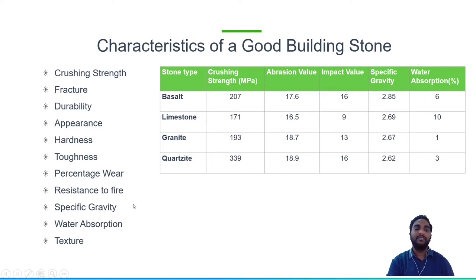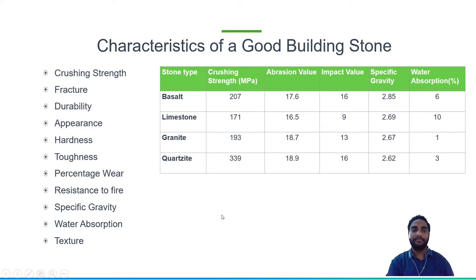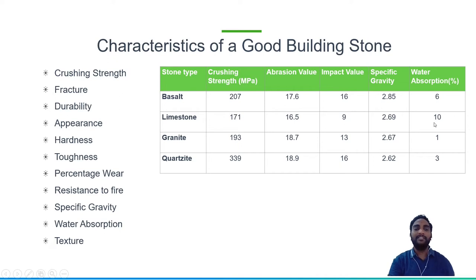Specific gravity is the ratio between the density of a substance to the density of an equal amount of water. For building stones it should be between 2.3 to 2.5 to be considered very good, and all the stones in the table have a good specific gravity. For water absorption, it should be less than 6%. Basalt has 6%, granite has 1%, and quartzite has 3%. That is why granite is used as a flooring material — it won't absorb water. Limestone can absorb up to 10% of its weight, which is strongly not recommended for flooring.